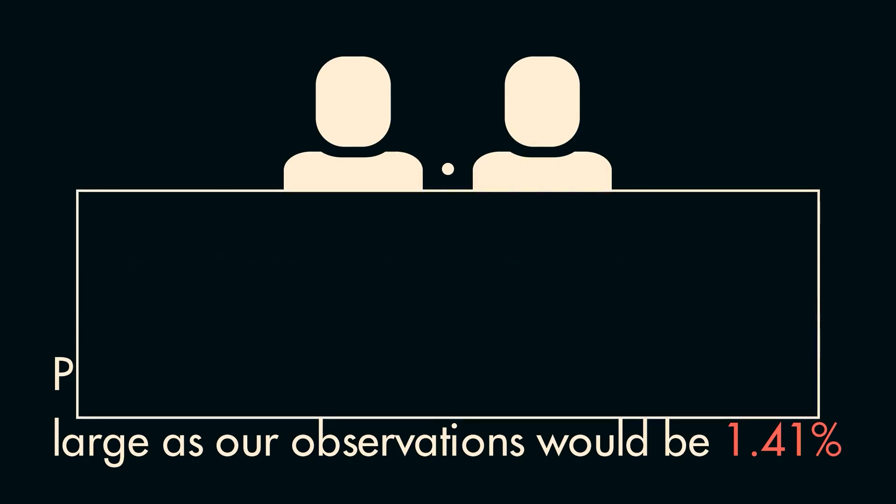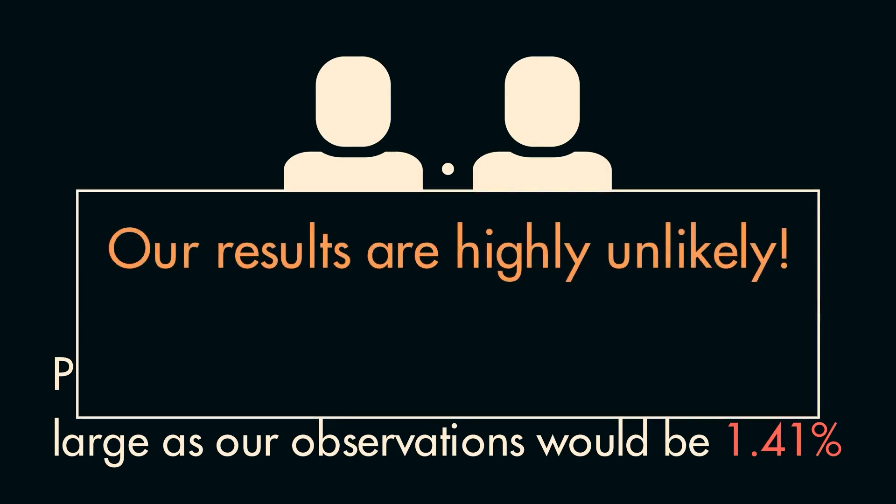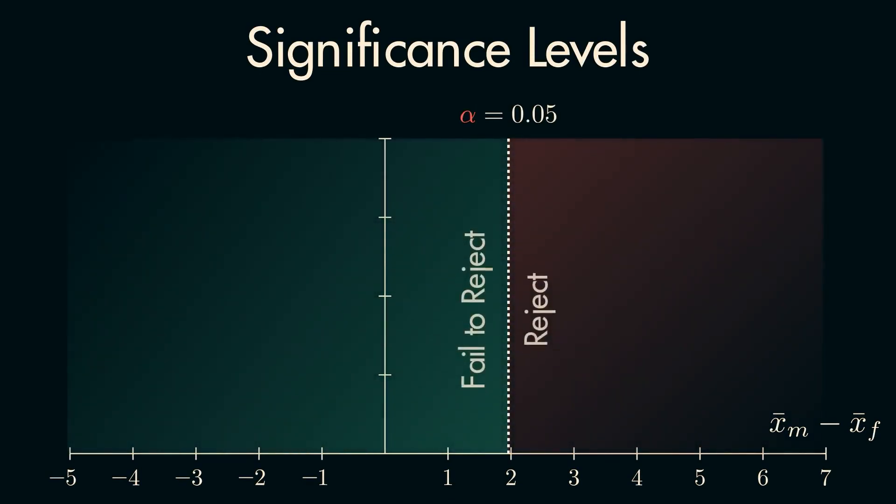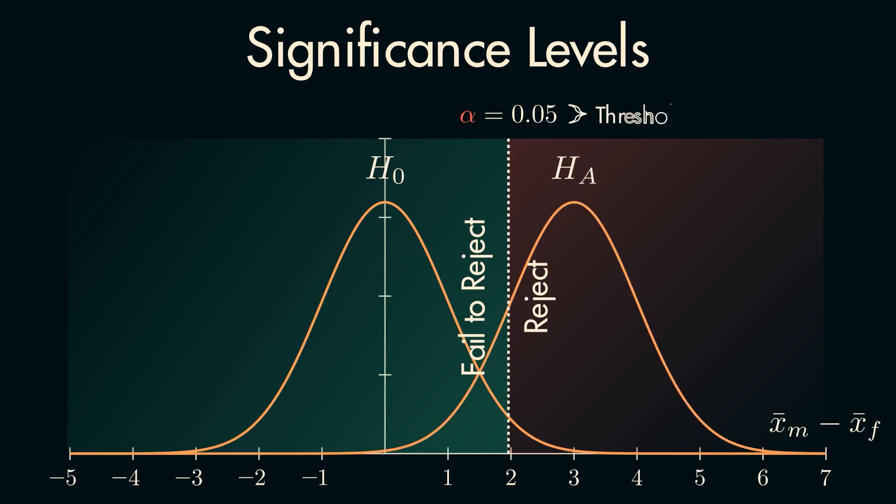Essentially, we are saying it is highly unlikely we would have received the results we did if the difference between the sexes was actually zero. It is common practice to set a certain significance level beforehand, often alpha equals 0.05, which acts as a threshold of how unlikely a result needs to be in order for you to feel confident in rejecting the null hypothesis. With a P-Value of 1.41%, we would indeed reject the null hypothesis using the standard significance level.